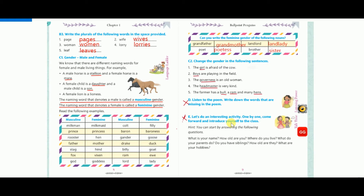Number 5 — leaf: leaf ends with the letter F, so we drop the F and add VES — L-E-A-V-E-S — leaves. Leaf becomes leaves.